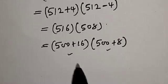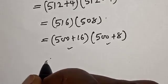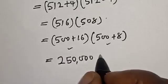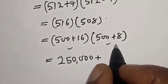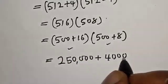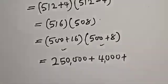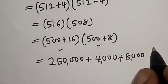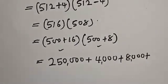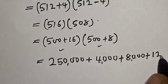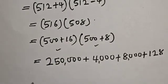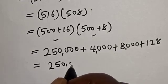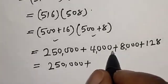Plus 500 times 8, that is 4,000. Plus 16 times 500, which is 8,000. Plus 16 times 8, that is 128. This equals 250,000 plus 4,000 plus 8,000, that is 12,000, plus 128.